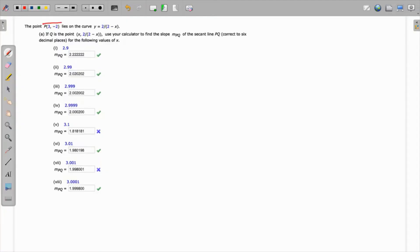In this question we are already given one point P that lies on this particular curve, and Q is another random point (x, 2/(2-x)). We need to use a calculator to find the slope of the secant PQ, where P is this point and Q is this point, to six decimal places at the following values of x.